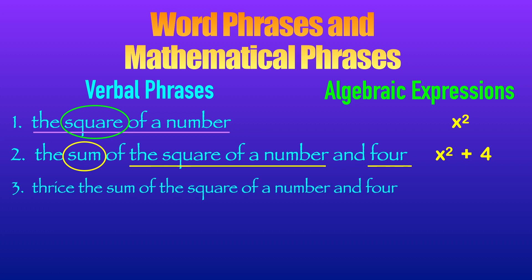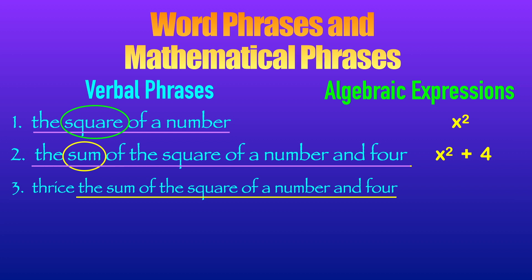Number three: 'thrice the sum of the square of a number and four.' Notice that 'the sum of the square of a number and four' is the same as number two — that is x squared plus four. Now we multiply it by thrice. We add open and close parentheses because we are multiplying the whole expression, and place 3 in front. So the algebraic expression for 'thrice the sum of the square of a number and four' is three times the quantity x squared plus four, written as 3(x² + 4).